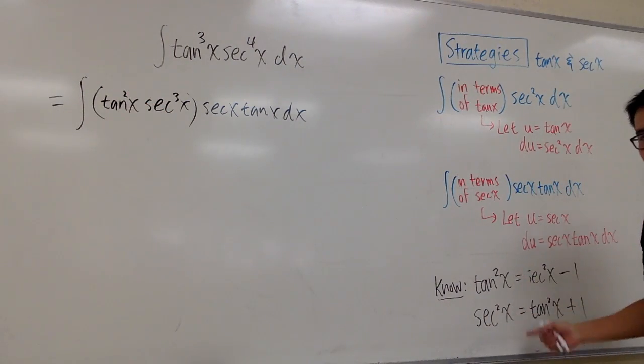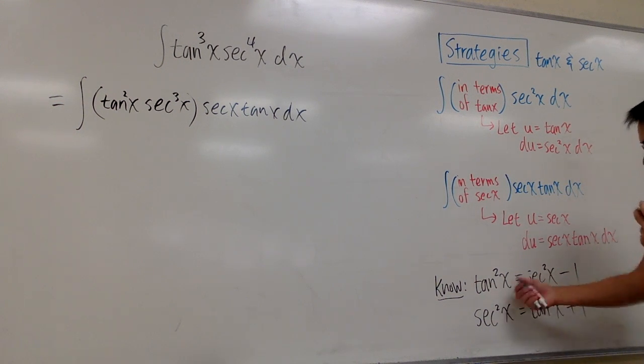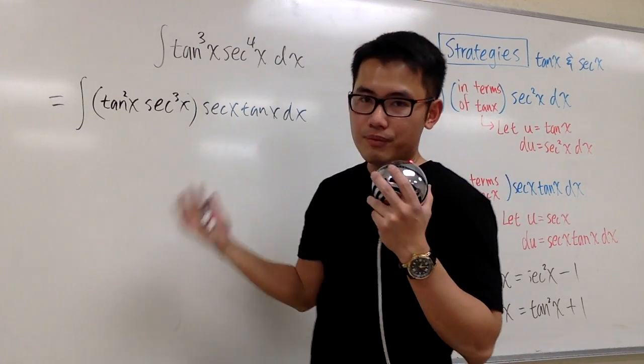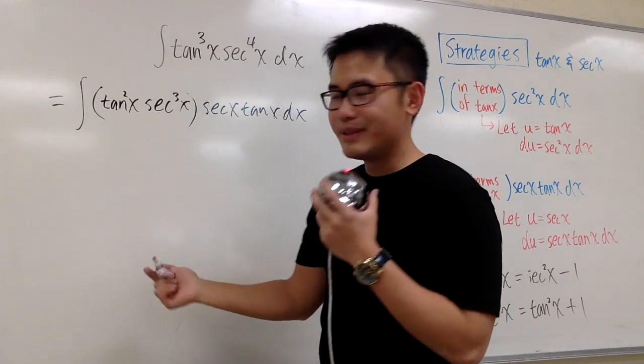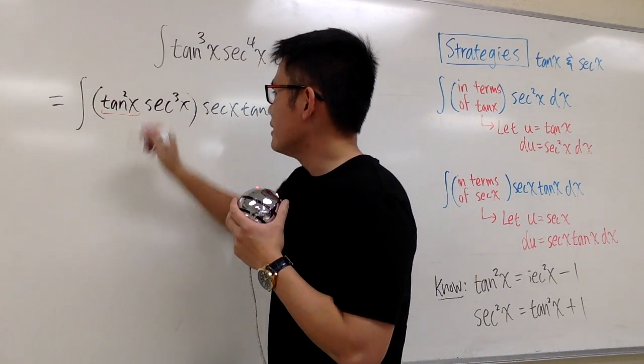The identities right here are always the even power, right? In terms of how we do the conversions. So, this time, it works.